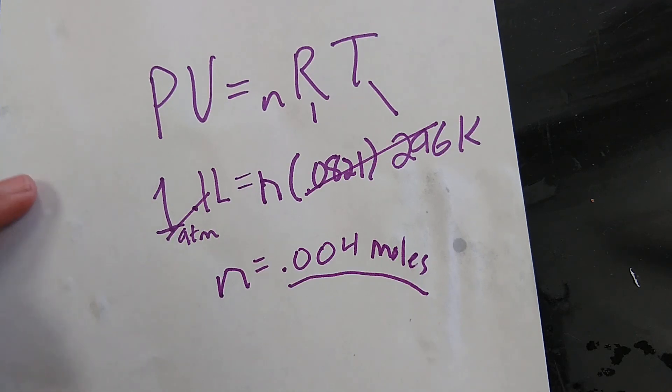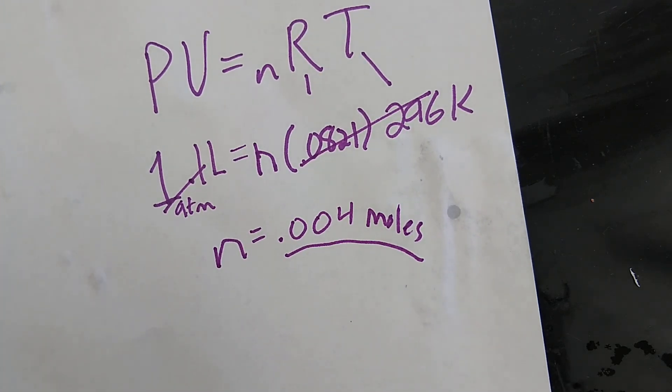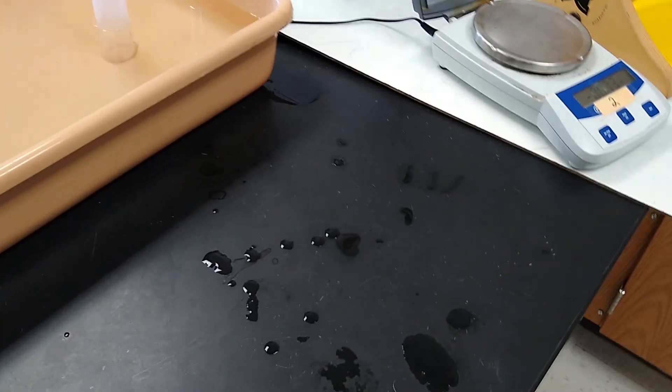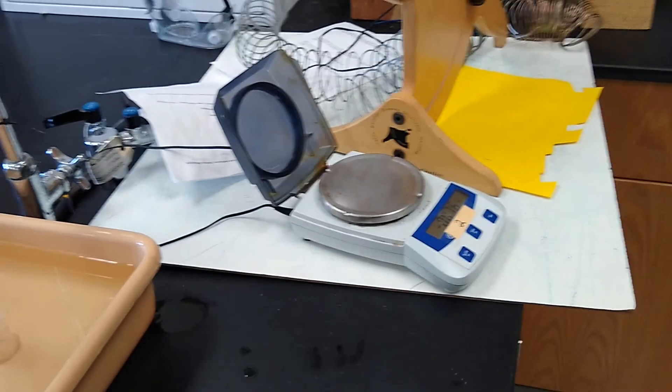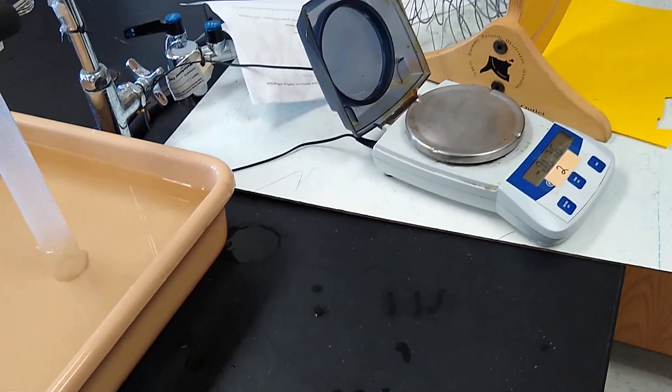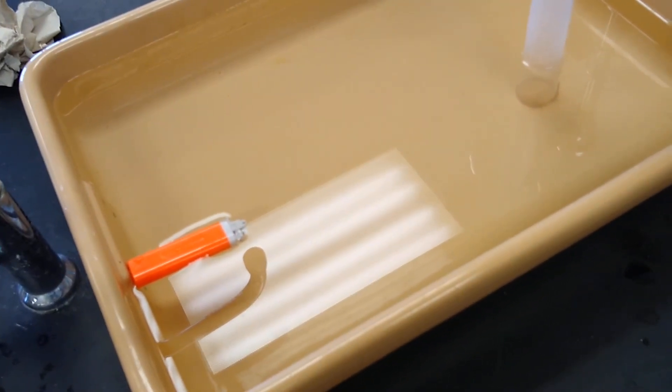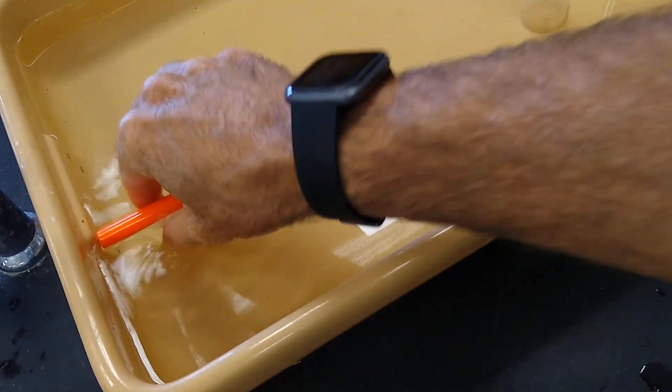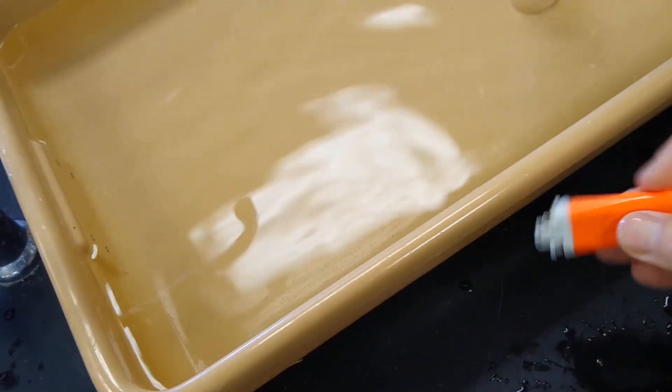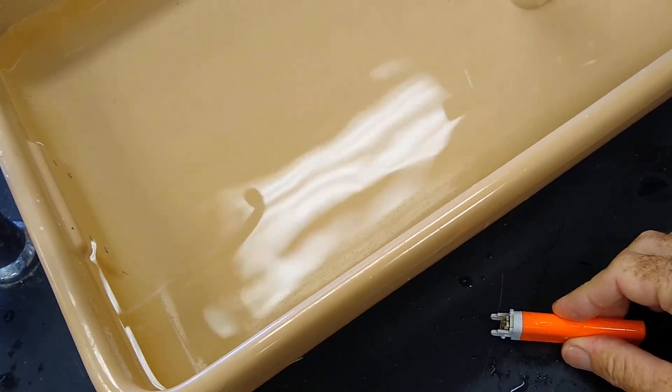So what do we need to do now? Well, what we should do now is re-weigh this lighter. But here's the thing. The lighter is wet. So we have to go through a great deal of effort to dry it off. I'll save you from the boredom.